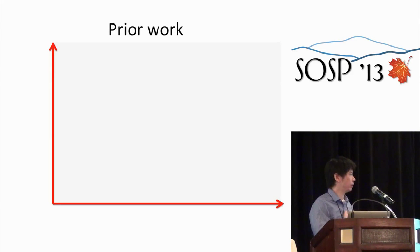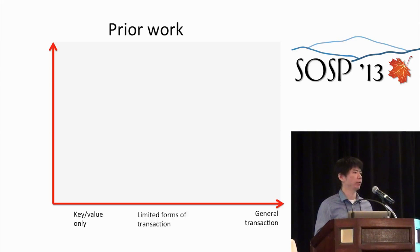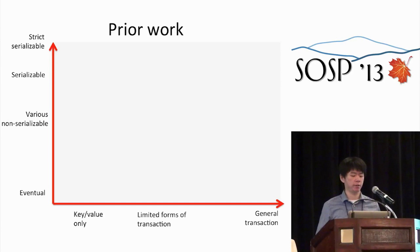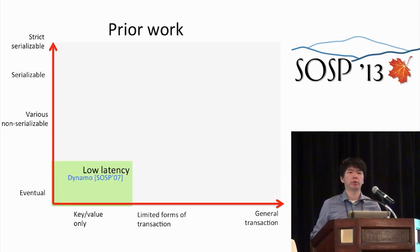Let's see what trade-off points are available. I'm showing systems along two dimensions. On the horizontal axis, we differentiate systems that provide general transaction support from those that only provide key-value storage support. On the vertical axis, I'm showing the consistency level, the weakest being eventual consistency, and the stronger ones being serializable and strict serializable. We know it's easy to build an eventually consistent key-value storage system, and we have Dynamo as an example.